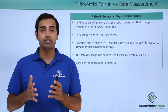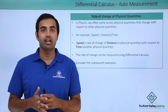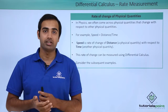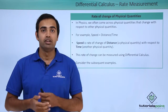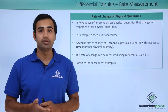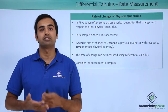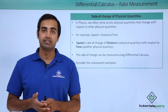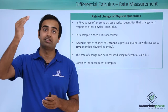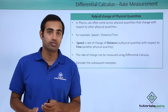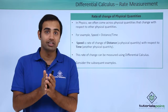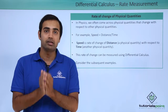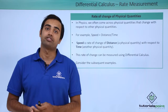It happens very often in physics that we have the rate of change of one physical quantity with respect to another. For example, speed can be expressed as distance upon time. In other words, we can read this as the rate of change of distance with respect to time, and both of them are physical quantities. So the tools of differential calculus can help us understand this rate of change.